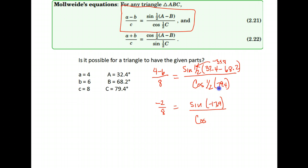Divided by the cosine of one half of 79.4. So 79.4 divided by 2 is 39.7. I'm going to now calculate each side with my calculator. So negative 2 divided by 8 gives me negative 0.25. On the other side, the sine of negative 17.9 divided by the cosine of 39.7 gives me negative 0.399475949.